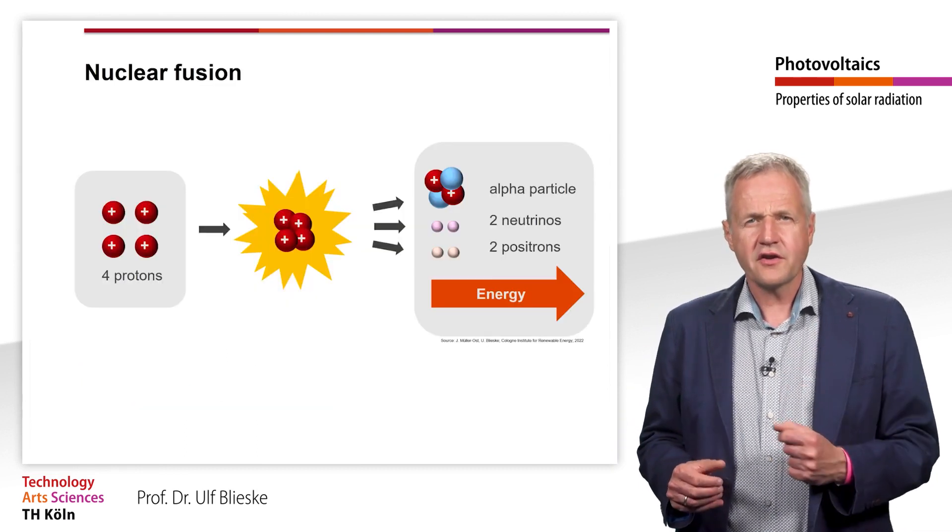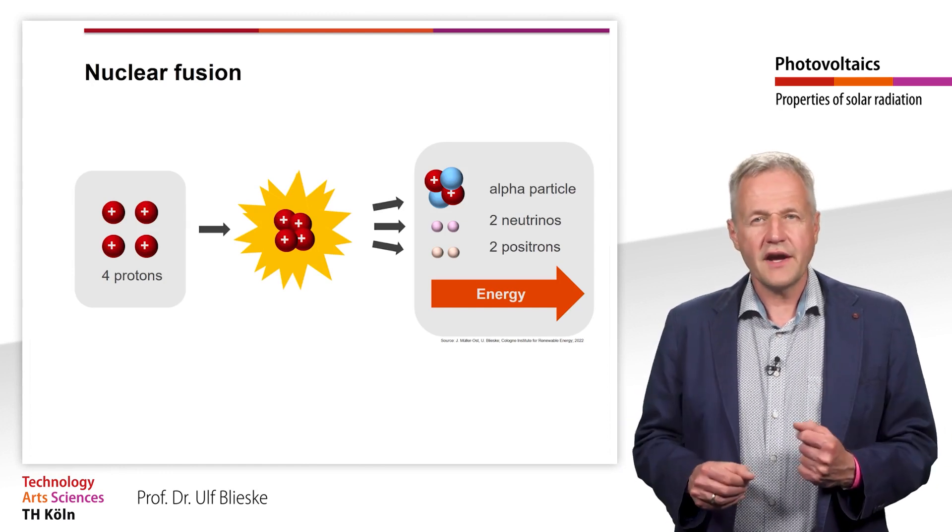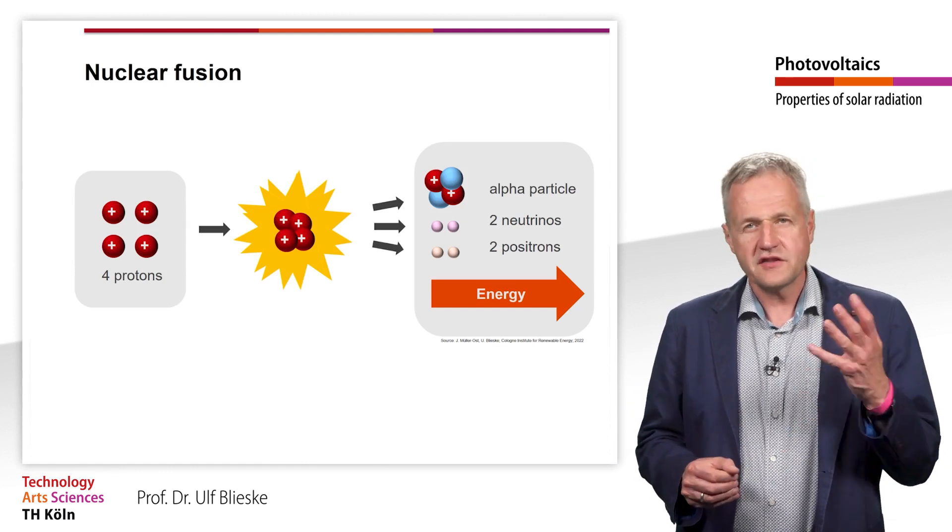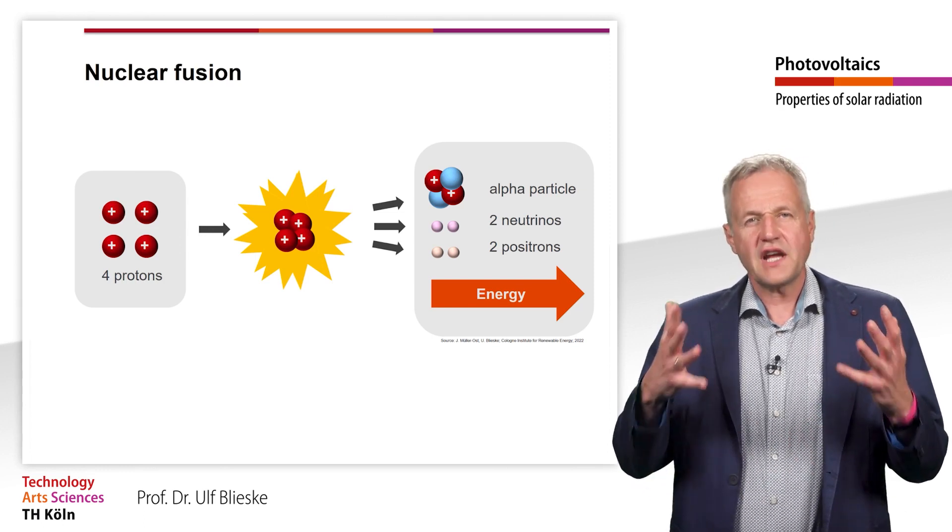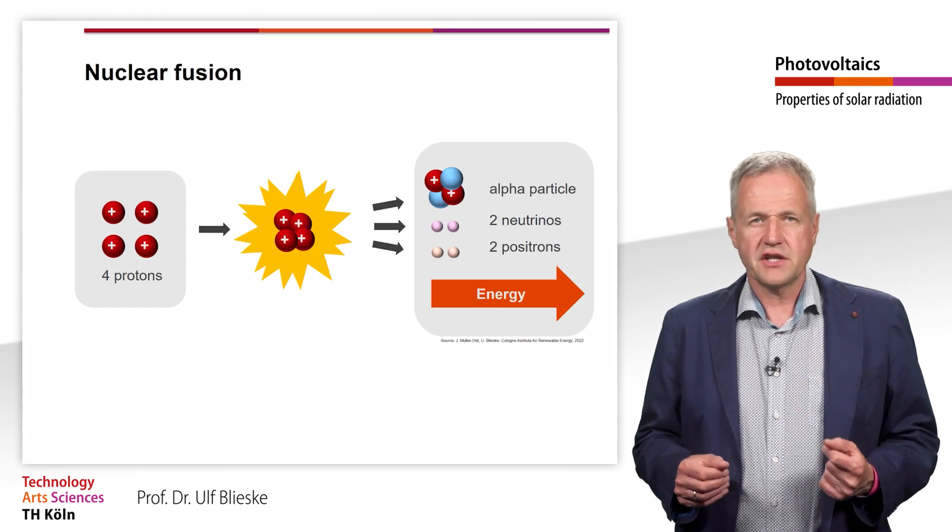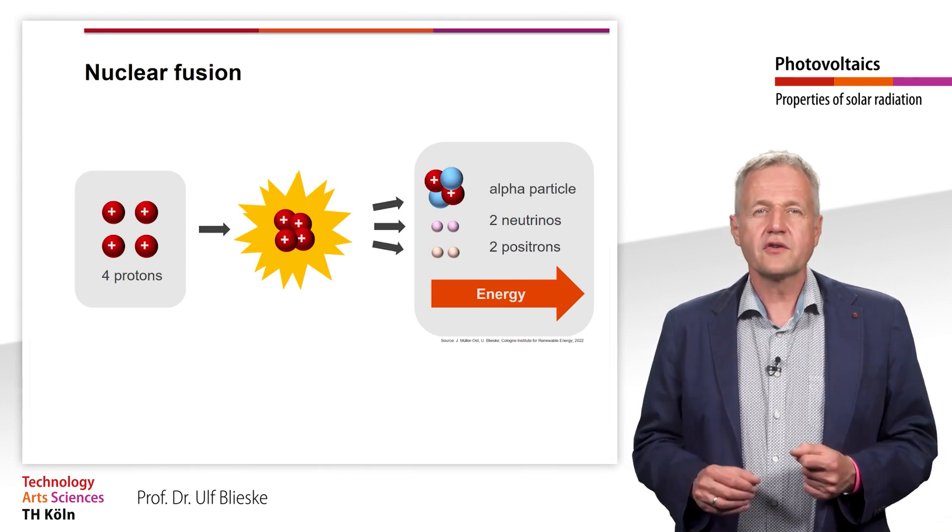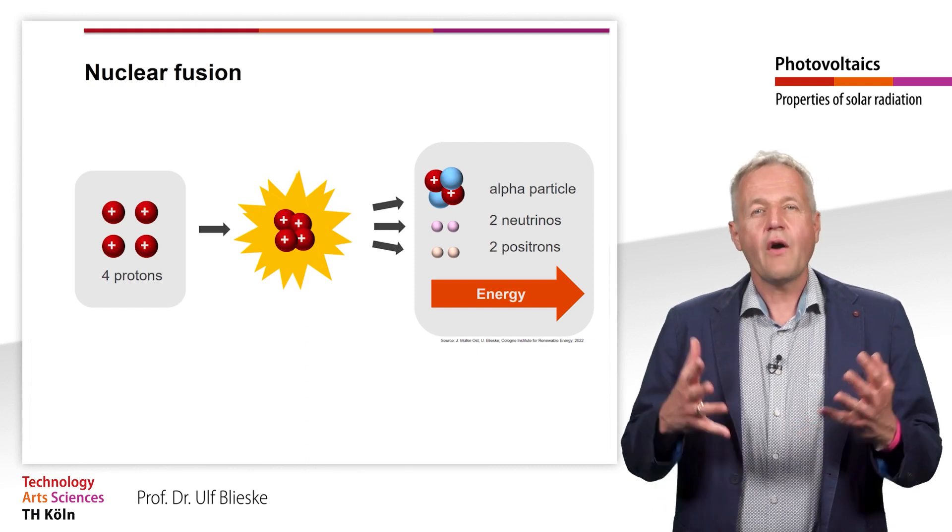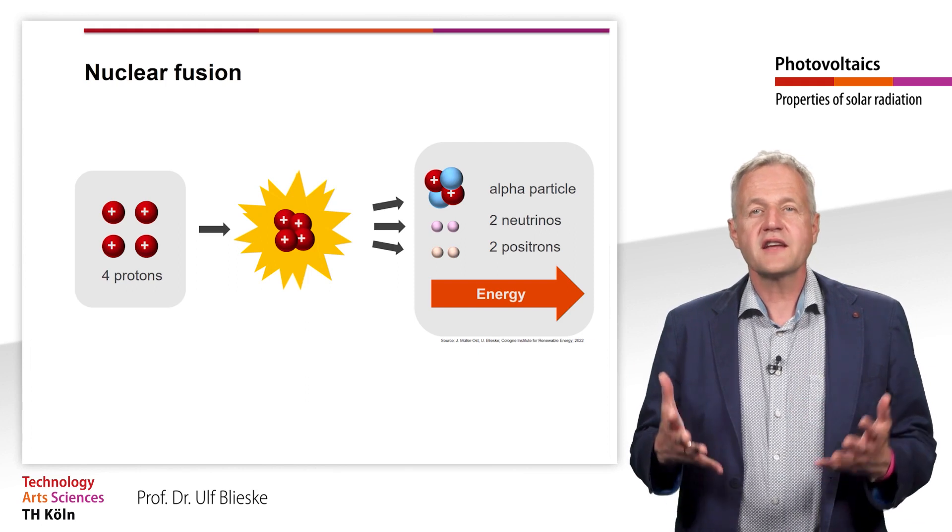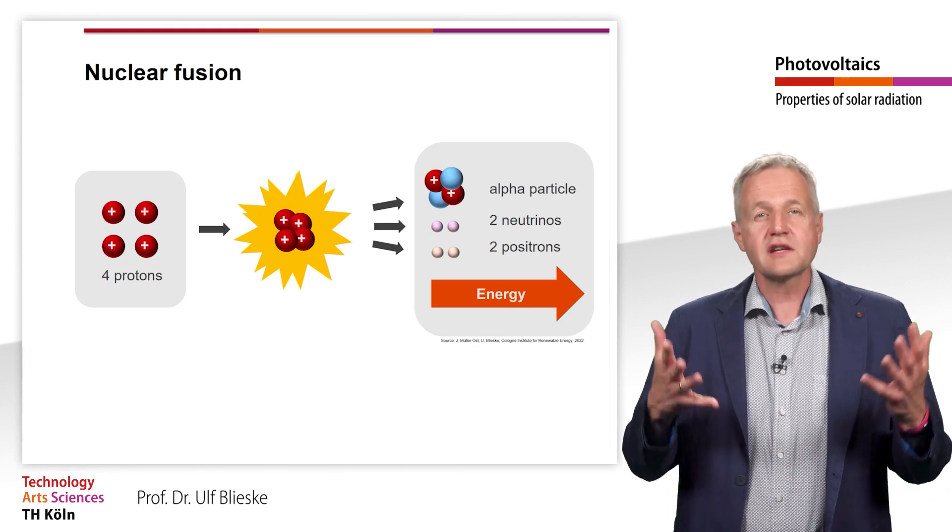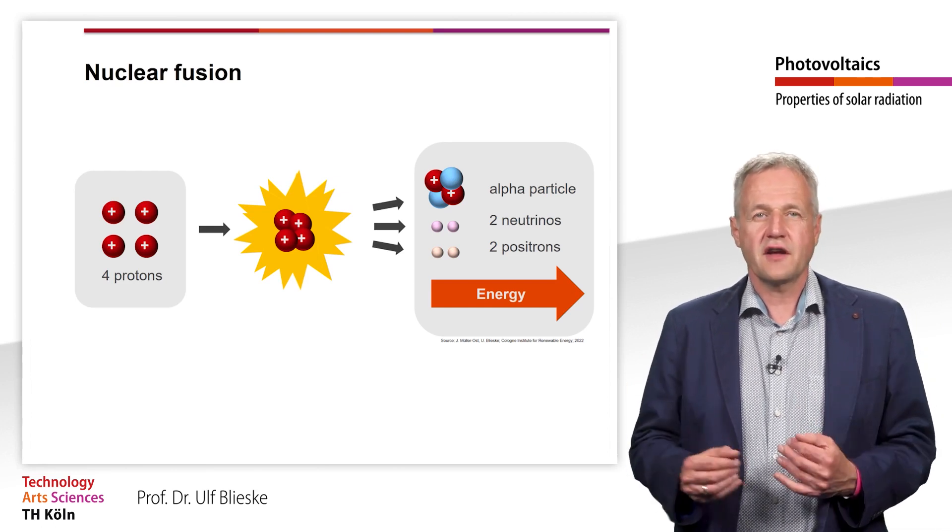If you thought that by using solar energy you would get rid of nuclear energy, then unfortunately I have to disappoint you. Because solar energy is also generated by nuclear energy. The advantage over the use of nuclear energy on Earth, however, is that the process of nuclear fusion in the Sun takes place 150 million km from Earth and only a small amount of harmful radiation reaches us.